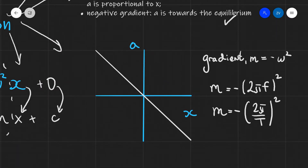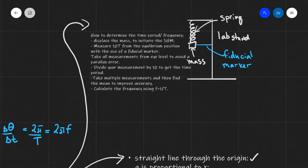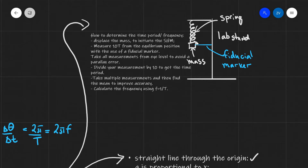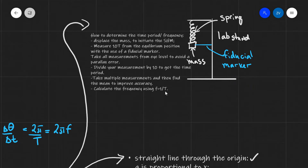Now let's look at how we can perform an experiment to measure the frequency of a simple harmonic oscillator. To determine the frequency or time period, we need a spring or pendulum on a lab stand with a fiducial marker — a visual reference point — placed at the equilibrium position. Every time the marker passes through this position marks one time period. Displace the mass, let it oscillate, measure 10 time periods, then divide by 10 to get the time period. Take measurements from eye level to avoid parallax error, and take multiple measurements to find the mean to improve accuracy. Once we have the time period, find frequency using f = 1/T, and if needed, angular frequency using ω = 2πf.